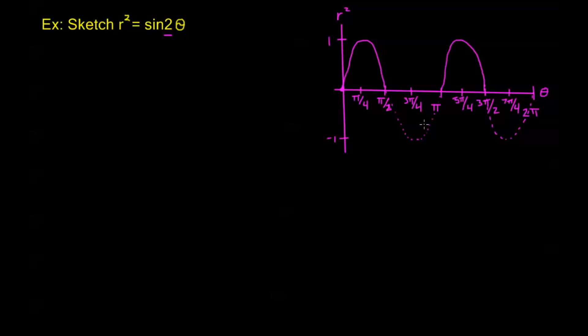Why did I dot here? These dots would be a part of just the graph of sine 2 theta, but the reason I dotted them is that these dots actually aren't going to appear anywhere on my polar graph. My polar graph is r squared equals sine 2 theta, so anywhere that sine 2 theta is negative I don't have r squared equaling a negative number. These parts are not part of my polar graph. They still exist and we'll talk about that in the next section when we talk about complex numbers, but they're not going to be on my polar graph because my polar graph is a real number graph.